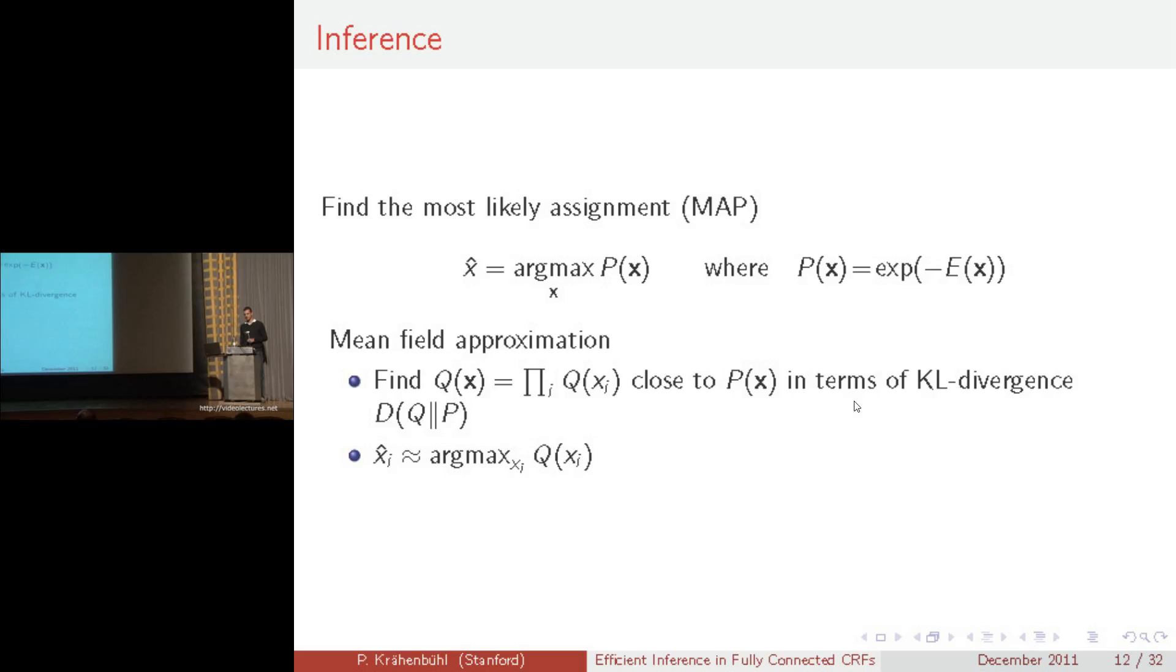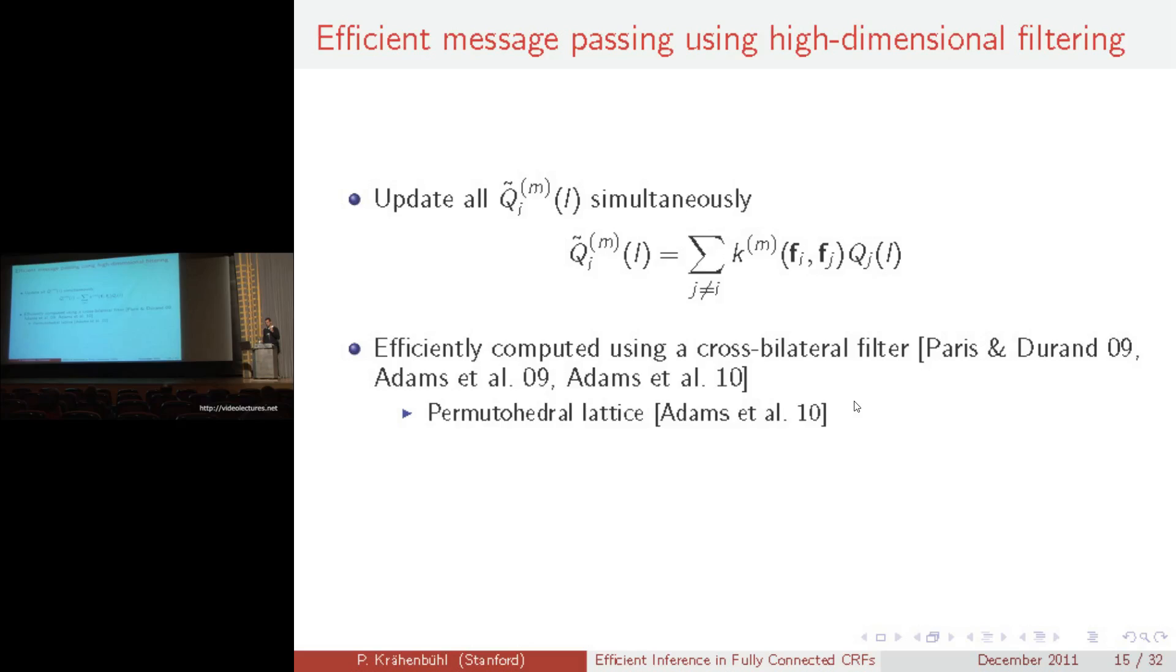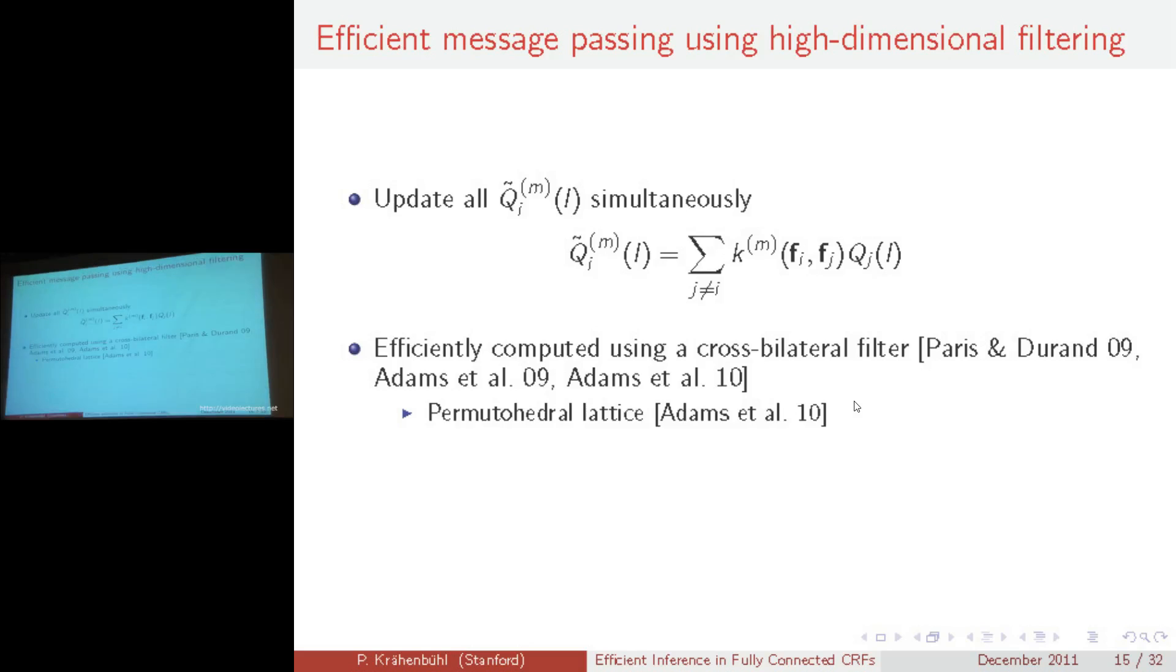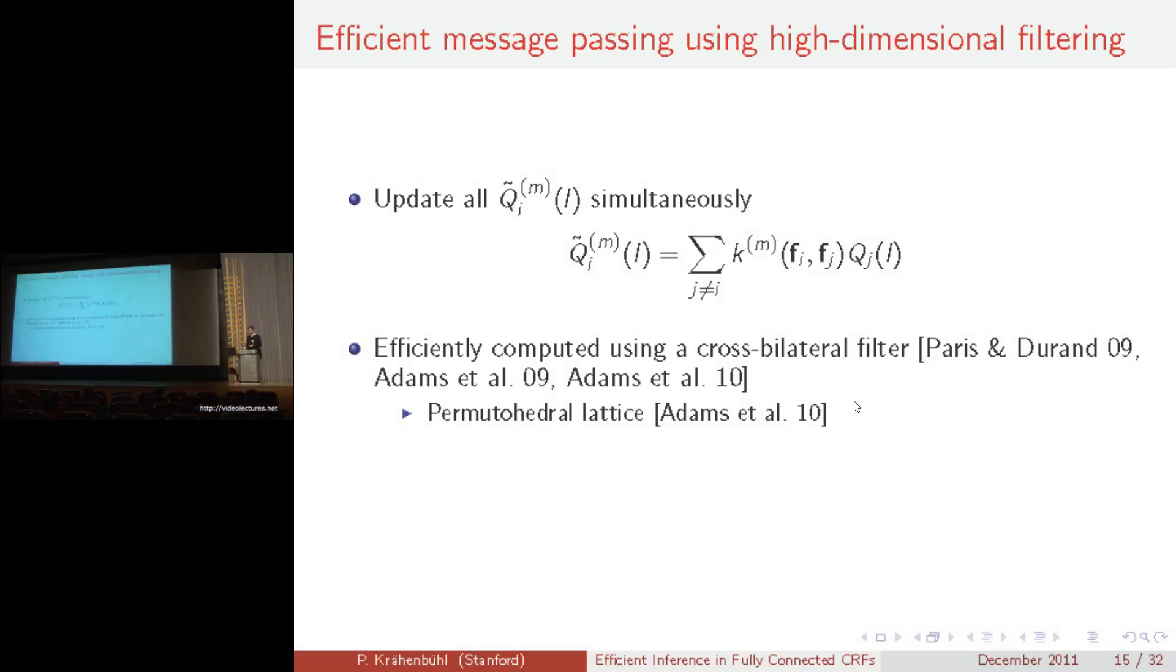It's not hard to see that the computationally expensive part of this mean field approximation is the message passing step, since it requires us to pass the message from every pixel to every other pixel in the CRF. However, by choosing Gaussian edge potentials, this message passing step is nothing else than a high dimensional Gaussian filter or a bilateral filter. There has been a large body of work in both computer vision and computer graphics on how to evaluate those high dimensional Gaussian filters efficiently. The method we use is called the Permutohedral Lattice, proposed by Adams et al. I'll now give you some intuition on why those Gaussian filters can be evaluated more efficiently.